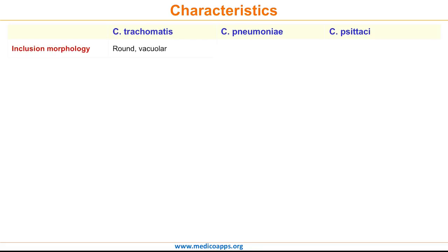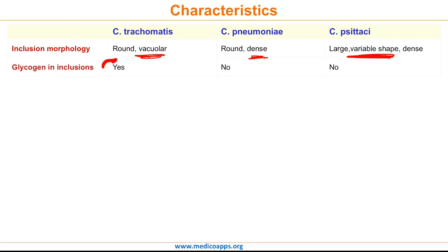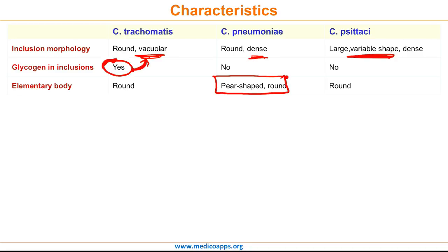Let's look at important differences between the species of Chlamydia. Regarding the morphology of the inclusion body: in C. trachomatis, the inclusion body is round and vacuolar; for C. pneumoniae it is round and dense; and for C. psittaci it is large and dense with variable shape. Glycogen is found in the inclusion body only in trachomatis, making it vacuolar, and is absent in the other species. The elementary body is round in trachomatis and psittaci, whereas it is pear-shaped in C. pneumoniae. Only C. trachomatis is susceptible to sulfonamides, while the other two species are not. C. pneumoniae has only one serovar, C. psittaci has four, but C. trachomatis has more than 15 serovars.